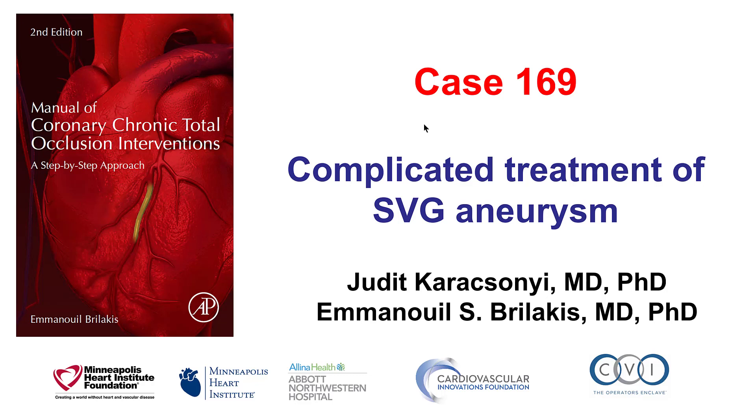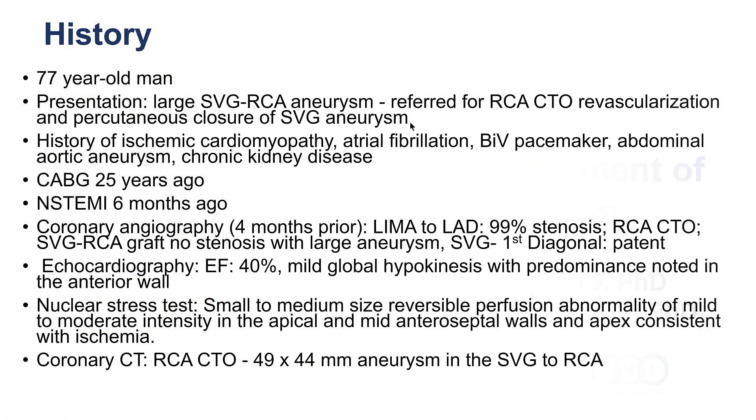This is a case describing a complex and complicated treatment of a saphenous vein graft aneurysm by recanalizing the corresponding native coronary artery. The patient was an elderly man who had previous coronary bypass and was found to have a vein graft aneurysm in the graft to the right coronary artery that was growing in size and measured nearly 5 centimeters.